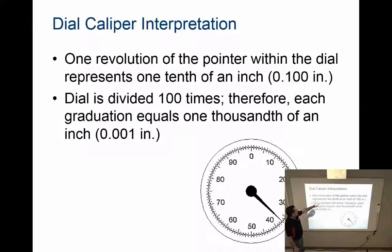One revolution of the pointer within the dial represents one tenth of an inch. The dial is divided a hundred times; therefore, each graduation equals one thousandth of an inch. The small dots between lines are five ten-thousandths of an inch, even smaller than that.